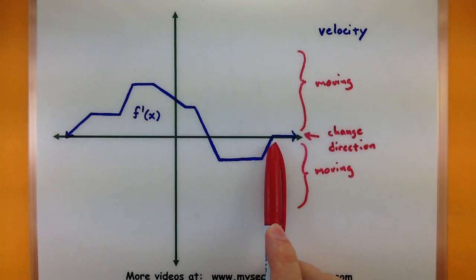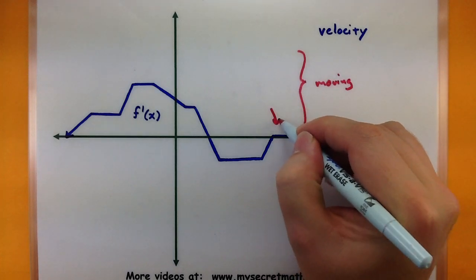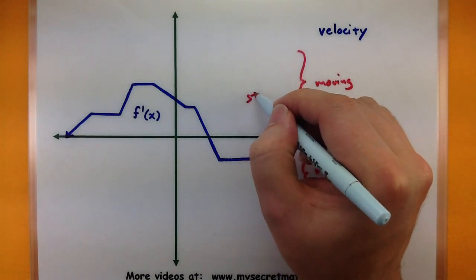And over here, it doesn't turn around here. This one stays completely level. So this is how we recognize where it stopped. So not only being level, but also at zero is how you know it is stopped.